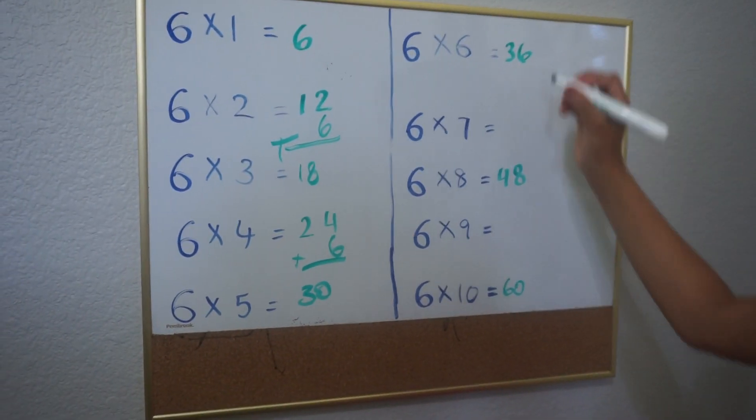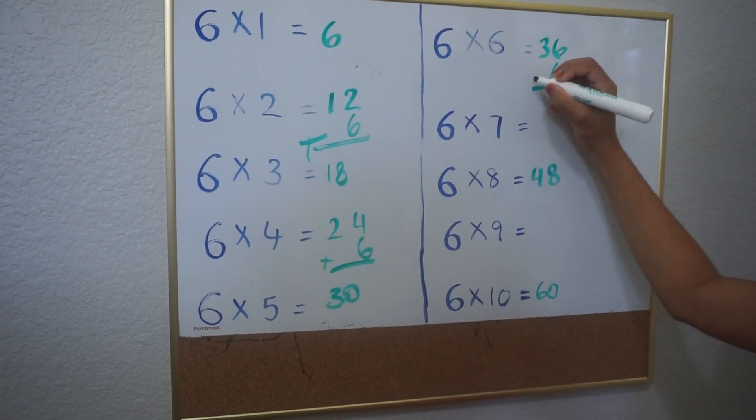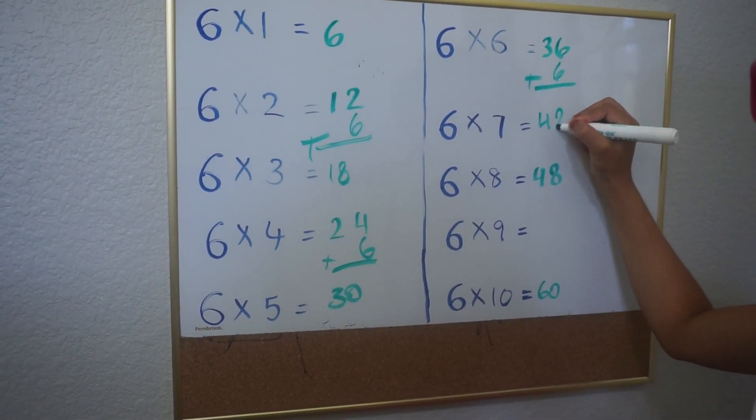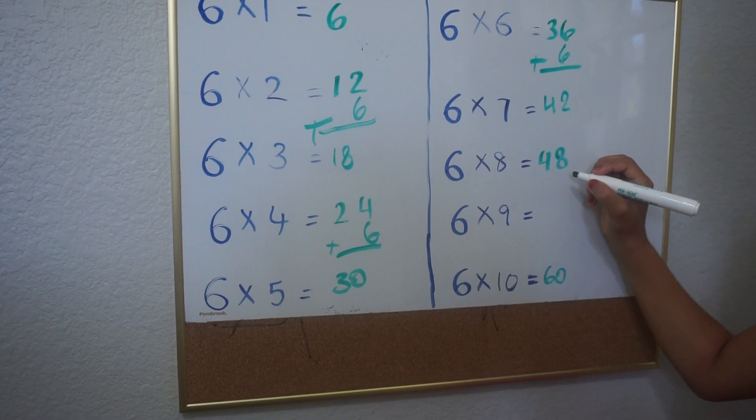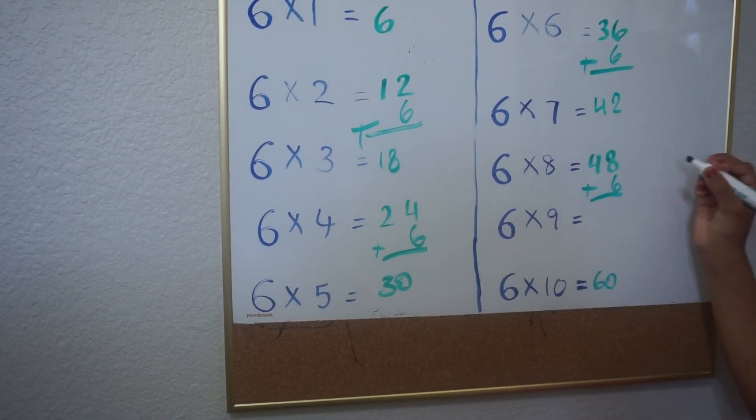And then you do the same thing for these ones. So 36 plus 6 equals 42. So you write 42 over here. And then 48 plus 6 equals 54.